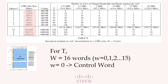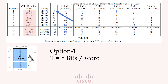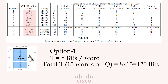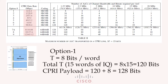Let us take the example of CPRI option 1. Here t is equals to 8 bits per word. So as there are 15 words, the total is equals to 120 bits of IQ data being carried in those 15 words. The CPRI payload is essentially 120 bits of IQ data and 8 bits of control word.